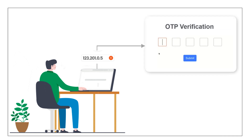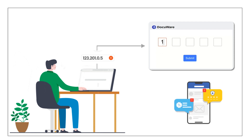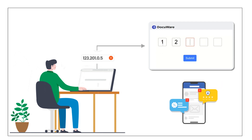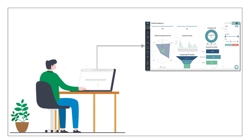On the MFA screen, the user has to enter the OTP provided via a selected MFA method, such as email, an authentication app like Google Authenticator for web applications, or phone.